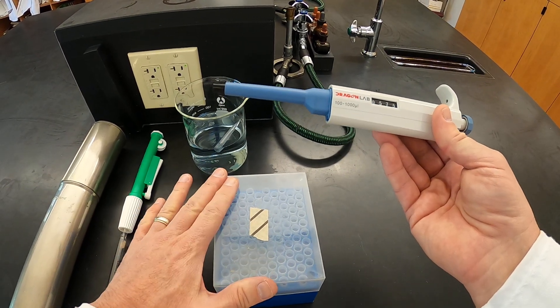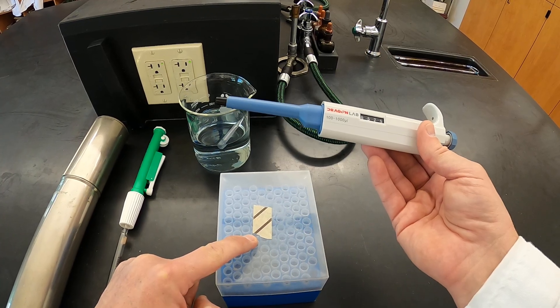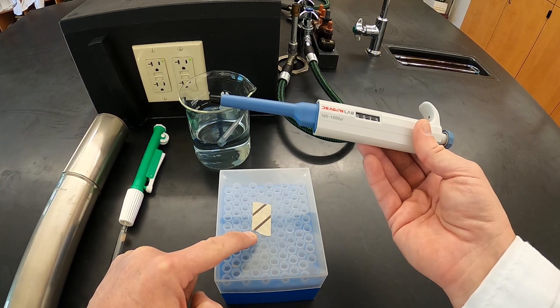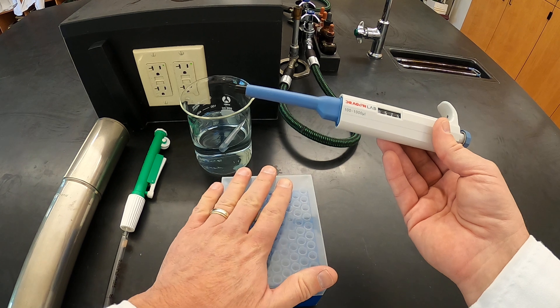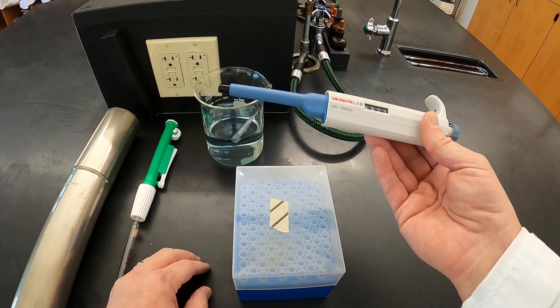So you'll notice with this disposable tip box that it's been sterilized, you can see that from the tape that is color changed here. And we want to be really careful to keep these uncontaminated as much as possible.